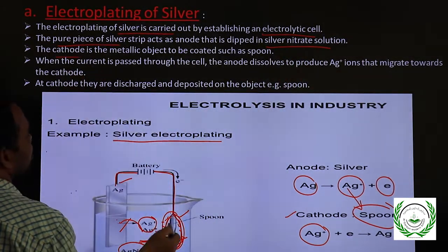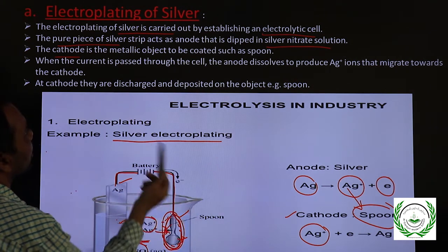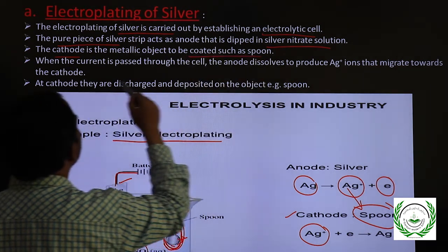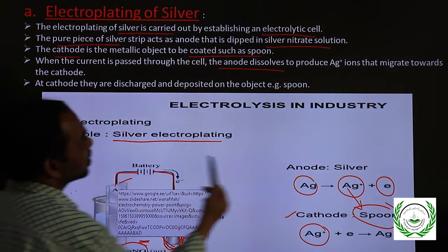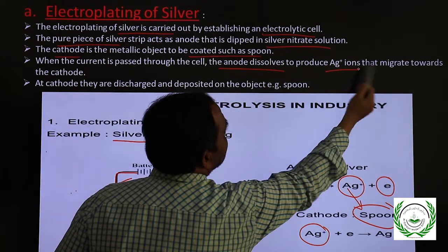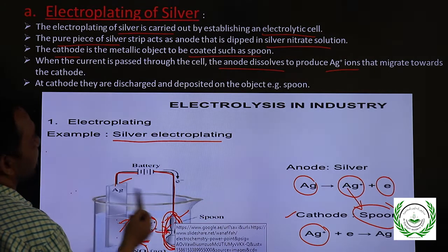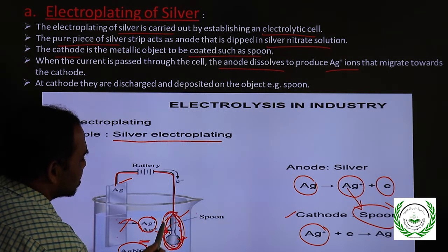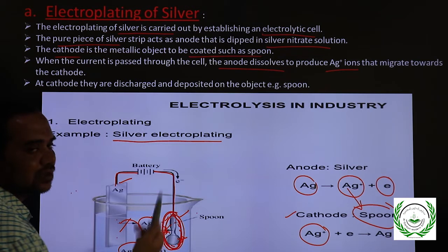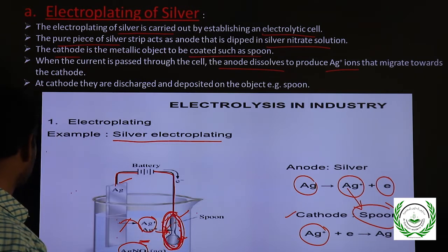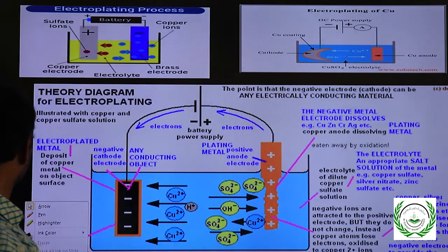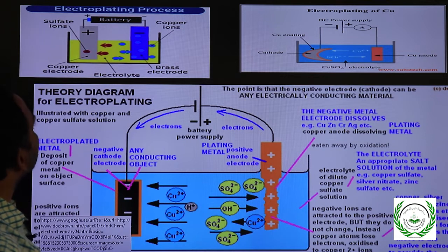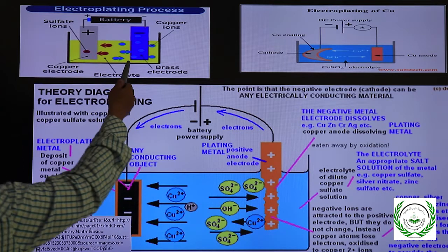The cathode is a spoon — some metal or iron — which is to be coated with silver. The anode dissolves: silver is dissolving and silver ions migrate to the cathode. The cathode is covered by silver metal. Let us understand this with the help of diagrams of the electroplating process.